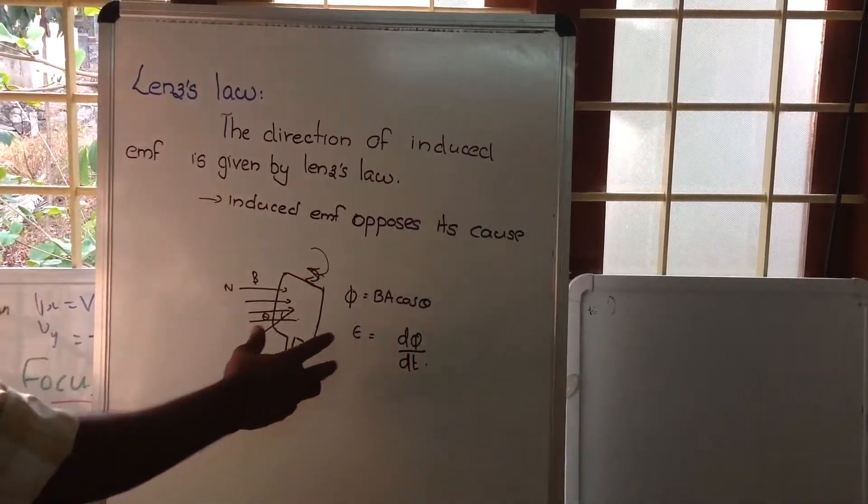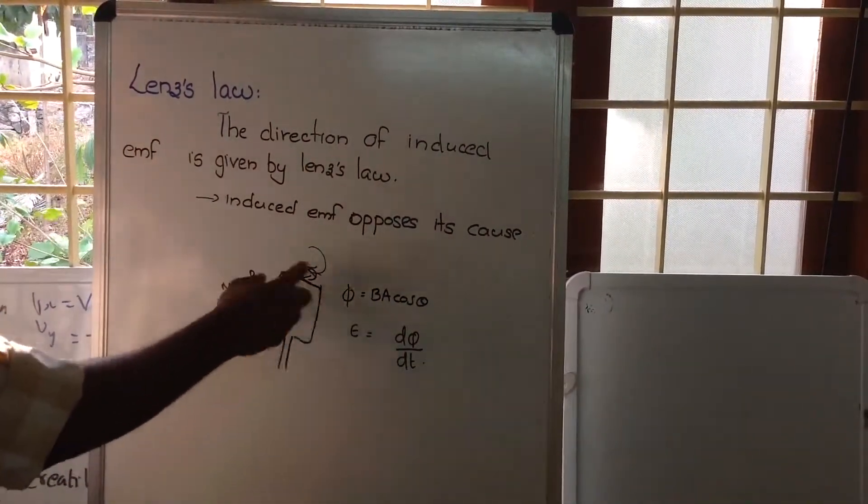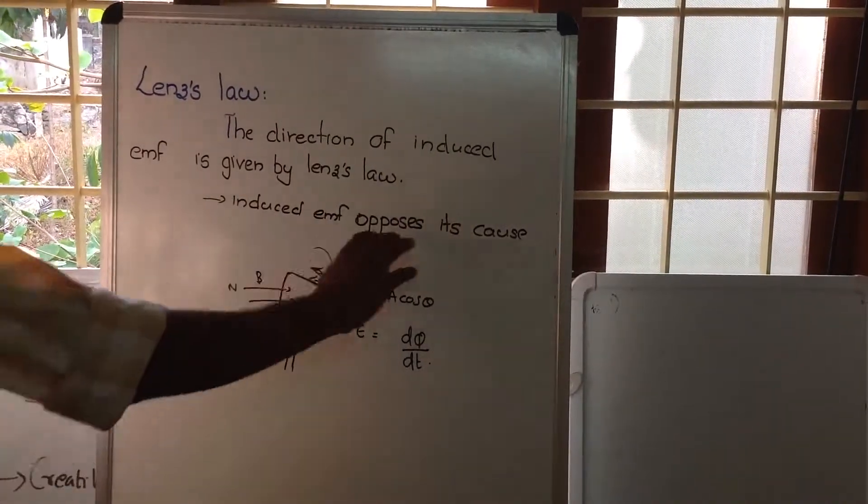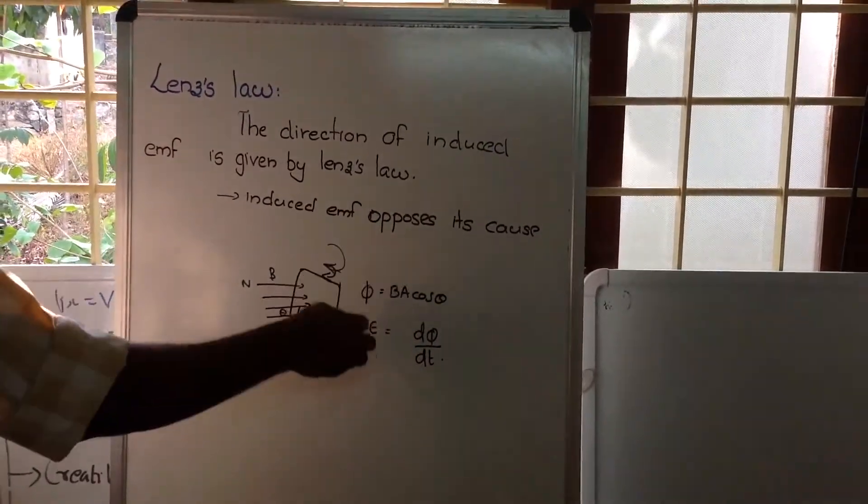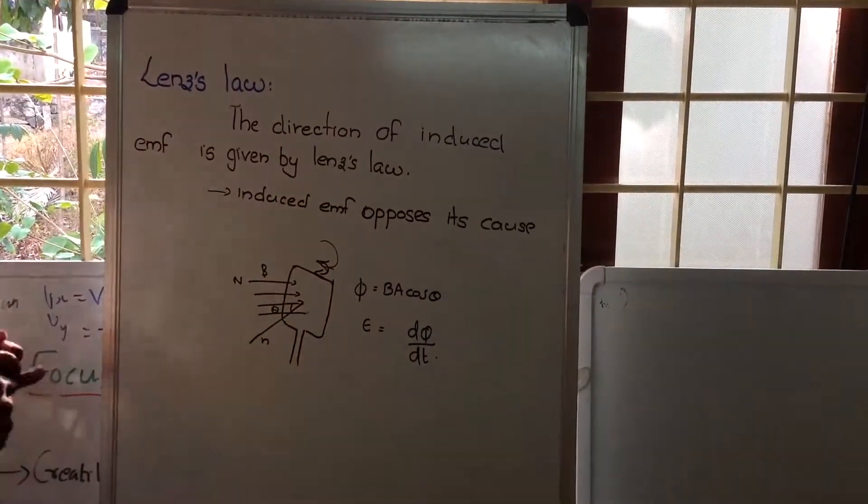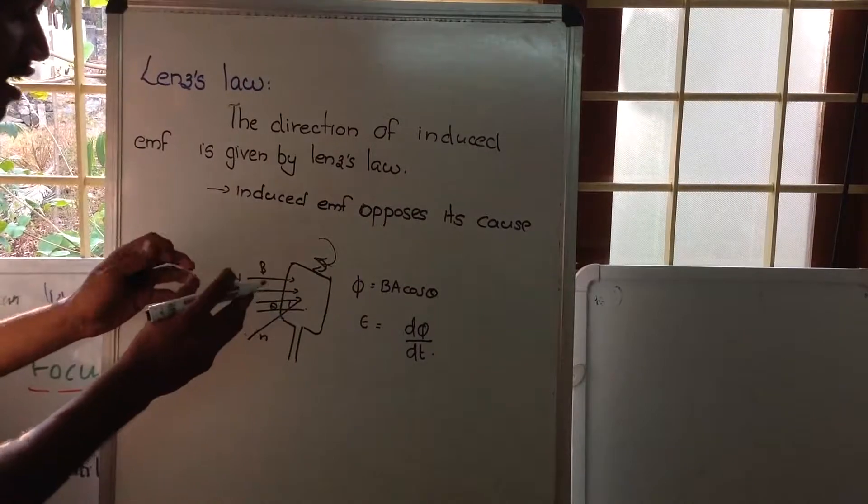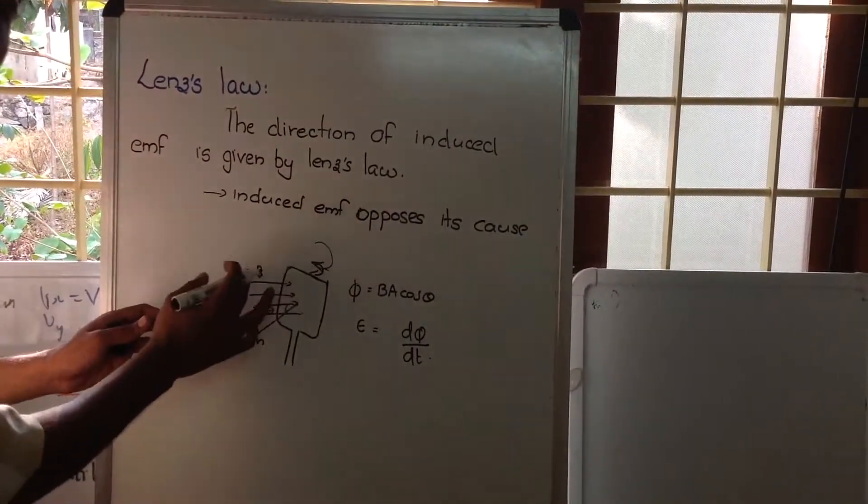So what happens is the coil tries to oppose its cause. That means it tries to decrease the magnetic flux. For that, it will try to decrease this magnetic field.